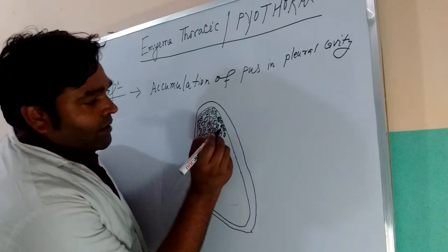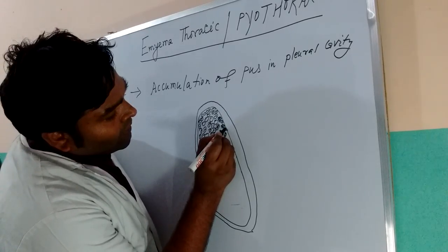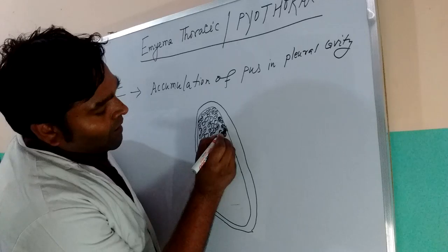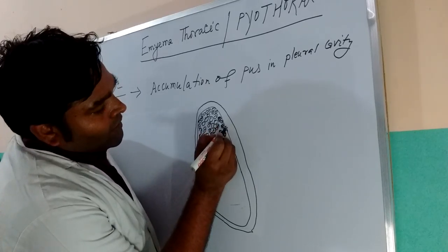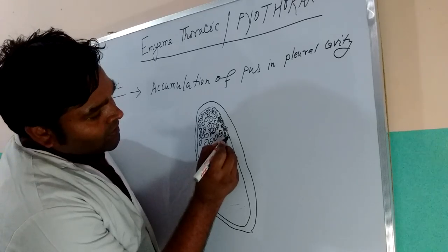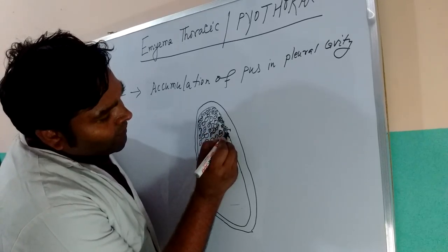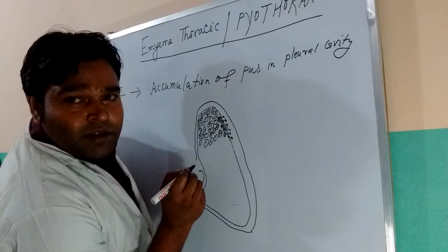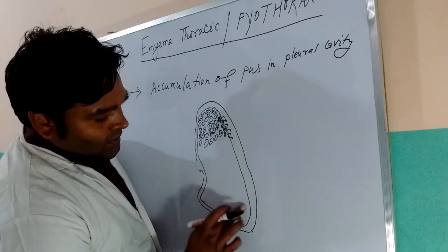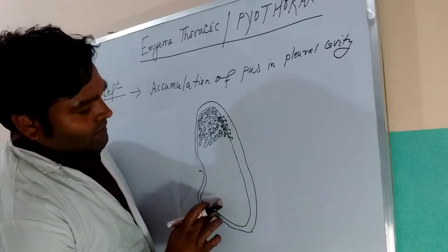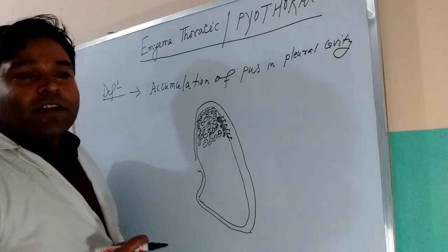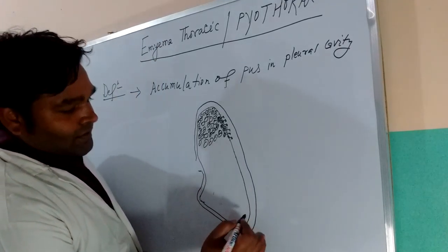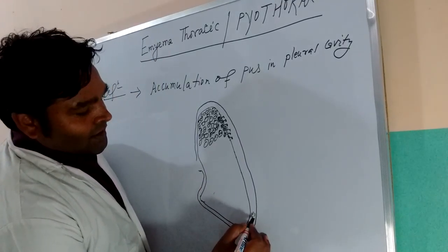Irritation of the visceral layer of the pleura stimulates inflammatory activity. Many mediators of inflammation will come to the visceral pleura and start secreting fluid. This fluid initially will be serous in character — watery in character. Every empyema thoracis or pyothorax usually initially starts with collection of serous fluid, known as pleural effusion.